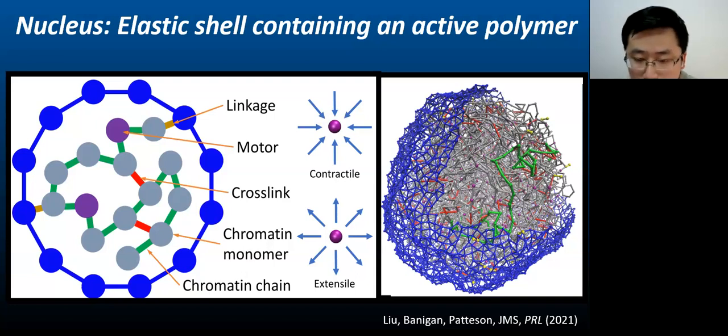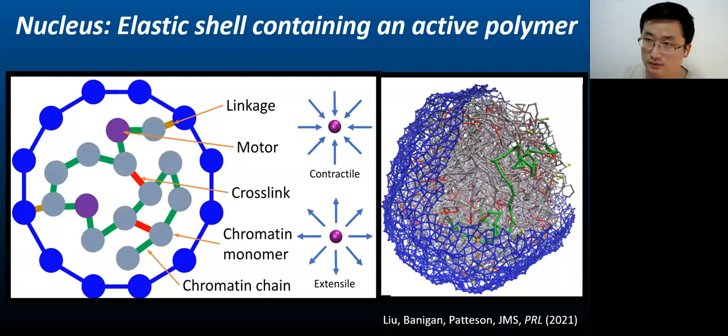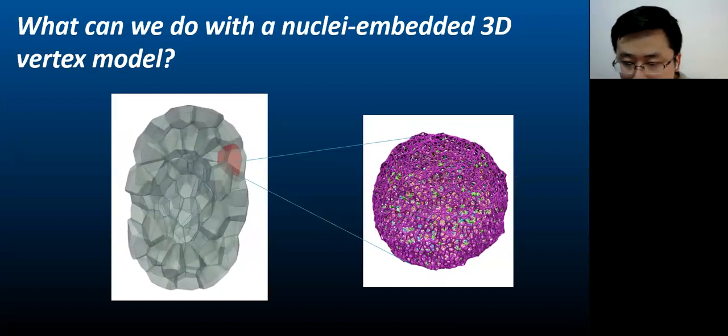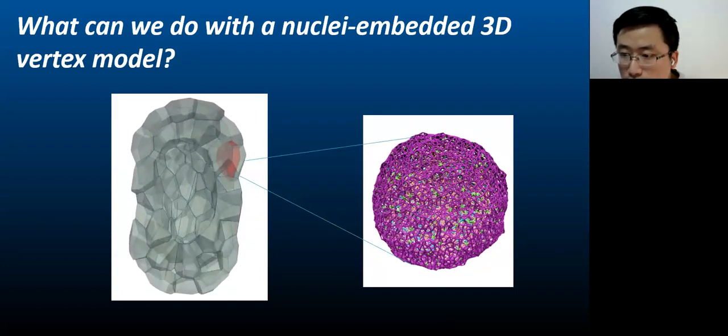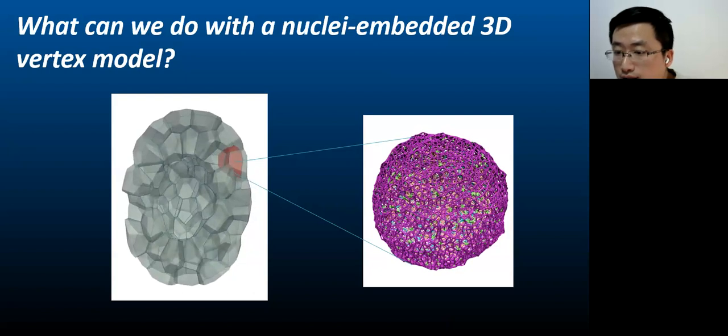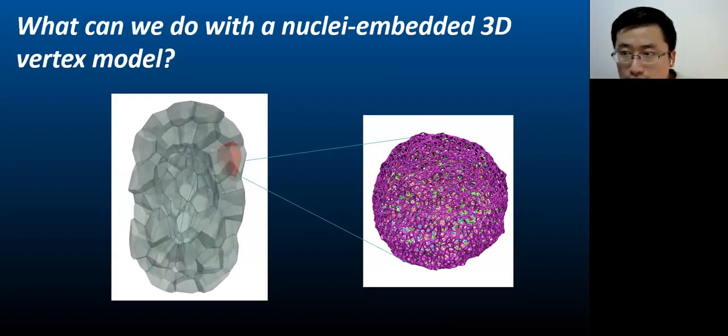This cell nucleus model incorporates activity as well as deformability of the shell and chromatin lamina linkage from which correlated chromatin motion emerges. The 3D vertex model, our model and the nucleus elastic shell model can be combined to ultimately test multi-scale hypothesis linking the chromatin scale and the tissue scale.